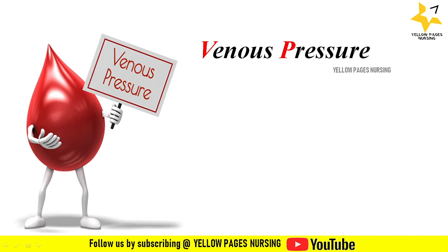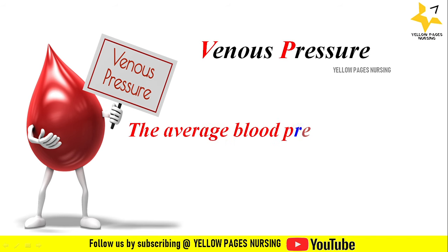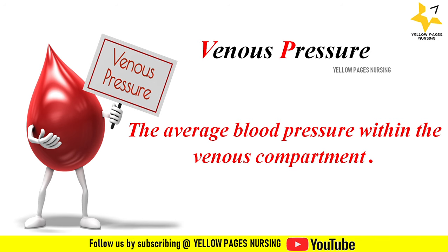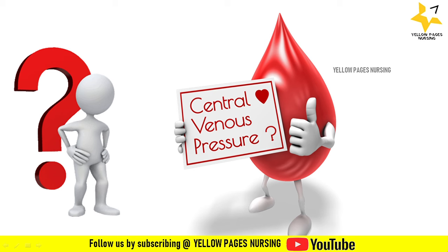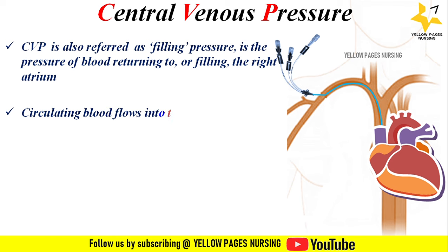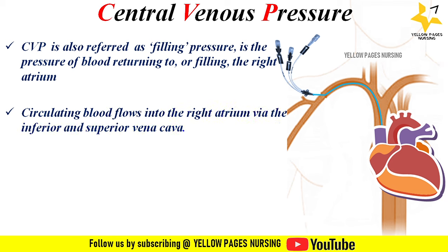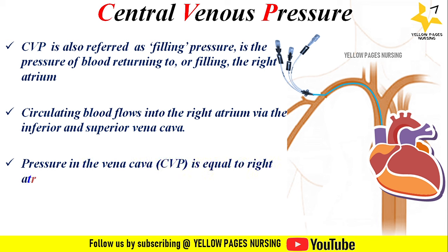What do we mean by venous pressure? The average blood pressure within the venous compartment. Central venous pressure is also referred to as filling pressure. It is the pressure of blood returning to or filling the right atrium. The circulating blood flows into the right atrium via the inferior and superior vena cava. Pressure in the vena cava is equal to right atrial pressure. In simple words, the pressure in the right atrium is known as central venous pressure.